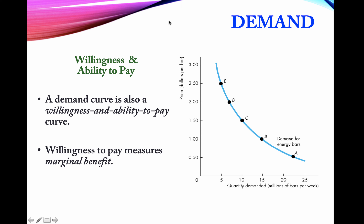Another way of thinking about the demand curve is as the maximum we are willing to pay for a good. In that sense, the price on the y-axis can also be thought of as marginal benefit — what is the benefit of consuming that extra unit? If quantity increases by one unit, the increase in benefit is the marginal benefit.